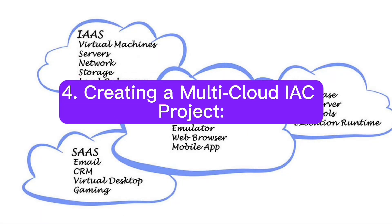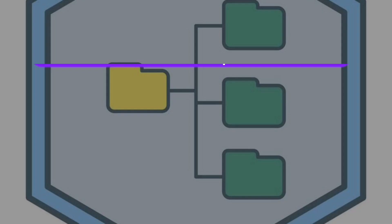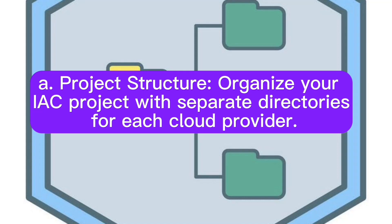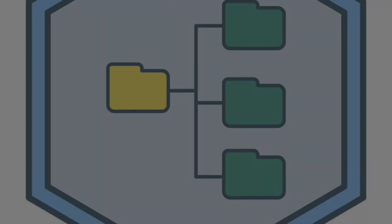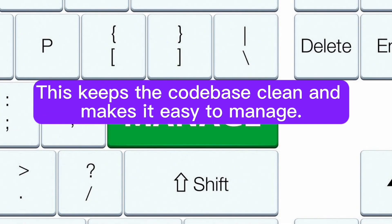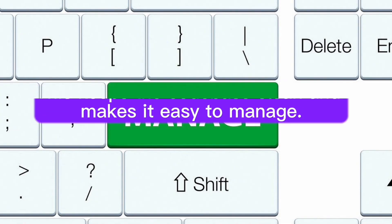Creating a multi-cloud IAC project. A: Project structure. Organize your IAC project with separate directories for each cloud provider. This keeps the code base clean and makes it easy to manage.